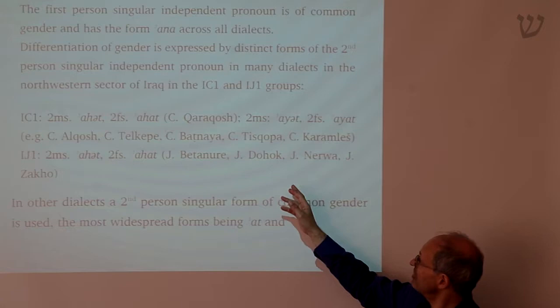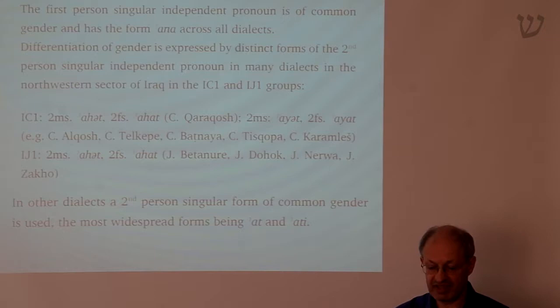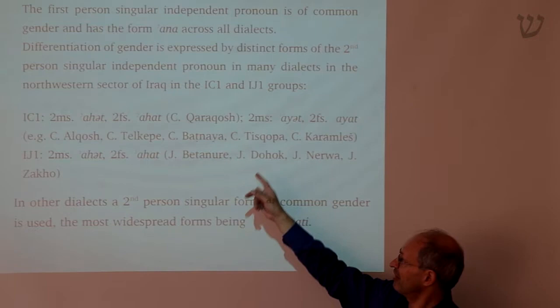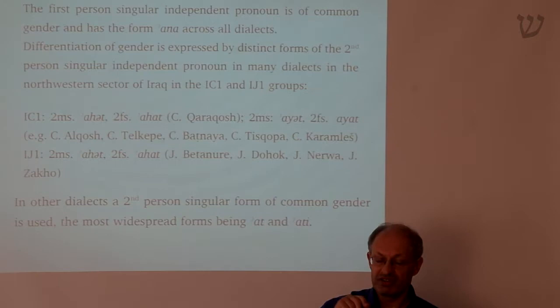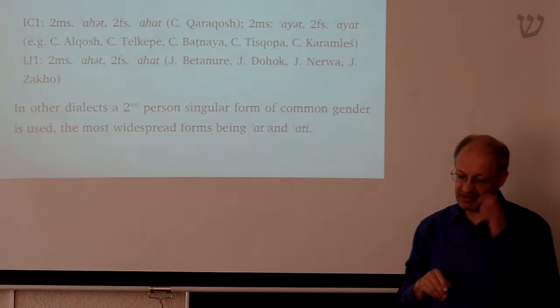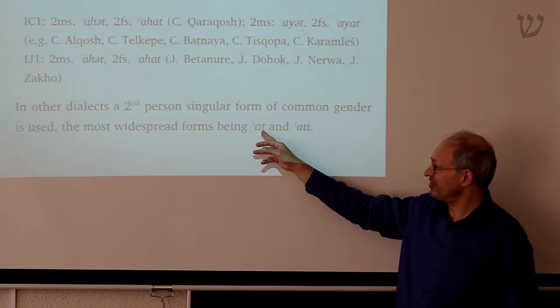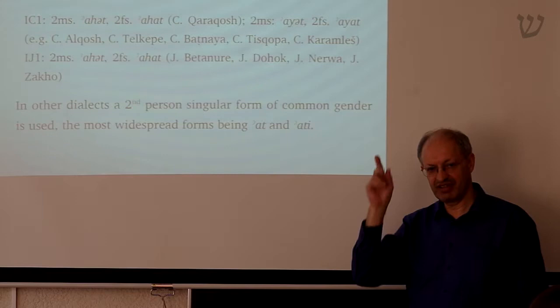However, there are some dialects which change the form of the second person pronoun in order to express gender distinctions, particularly in the area of the Mosul plain like Karakosh. In Karakosh, you say 'ahit' for 'you' singular masculine, but 'ahat' for 'you' singular feminine. What's happened is they have taken the pronoun 'at' and split it syllabically into 'ahit' and 'ahat', and the endings 'it' and 'at' have been taken from the verbal inflection, where there are gender distinctions for second person.